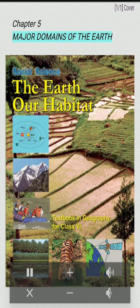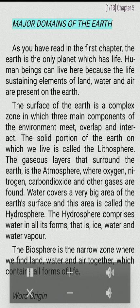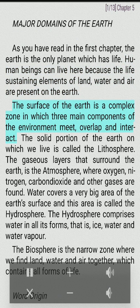Chapter 5: Major Domains of the Earth. As you have read in the first chapter, the Earth is the only planet which has life. Human beings can live here because the life-sustaining elements of land, water and air are present on the Earth. The surface of the Earth is a complex zone in which three main components of the environment meet, overlap and interact.